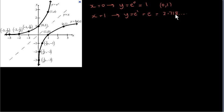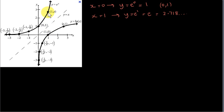There is no pattern in the decimal expansion of e, which means that e cannot be written as a fraction. e is not a rational number — it's an irrational number. So when x is 1, y is roughly 2.7, so we go up to 2.7 on the y-axis.